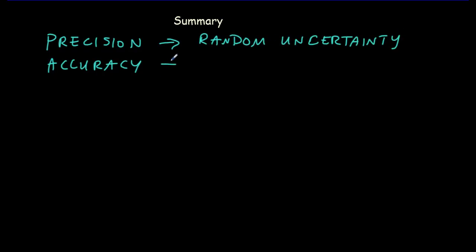Let's summarize the big ideas from the video. We started off with the idea of precision and accuracy. And we said that precision was affected by random uncertainty. Whereas accuracy was affected by systematic error.